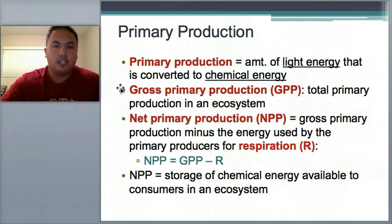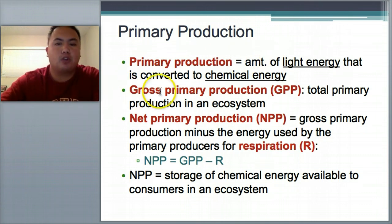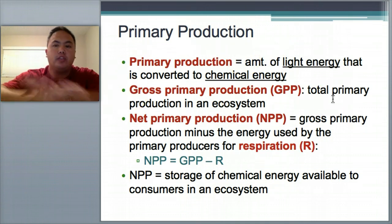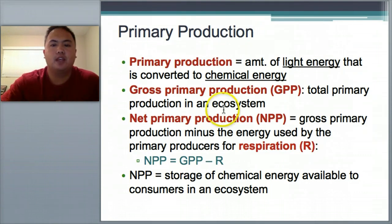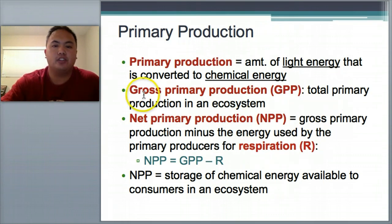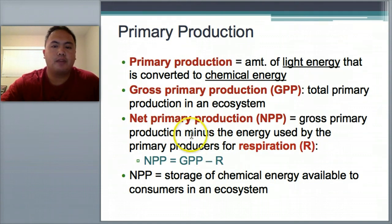Speaking of primary production — we're talking about plants again. Primary production is the amount of light energy converted into chemical energy. Gross primary production is the total amount of light energy converted into chemicals across the whole ecosystem. Net primary production means taking everything created and subtracting the energy used — similar to gross profit versus net profit. So gross primary production minus the energy used for respiration equals net primary production.